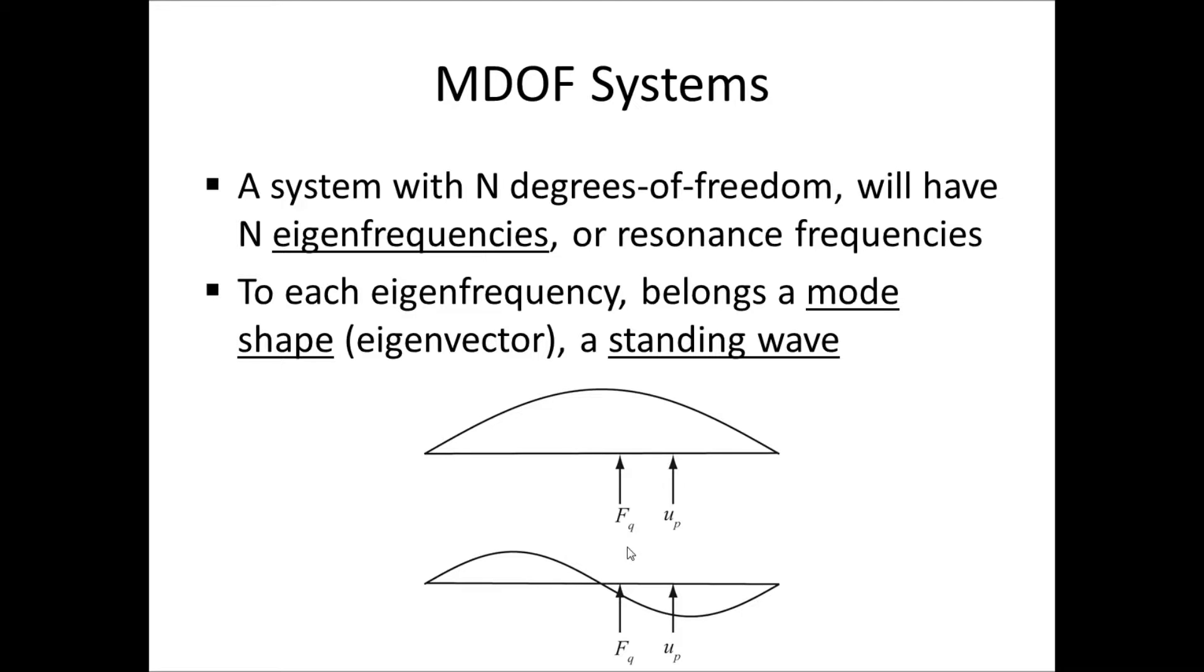Now, a system with N degrees of freedom, capital N degrees of freedom, will have N eigenfrequencies or, if you want, resonance frequencies. And for each eigenfrequency, there is a mode shape coming from the eigenvector, which means a standing wave, at least in the case of undamped systems.